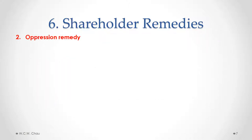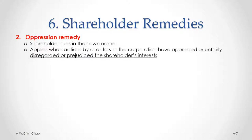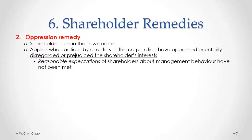The second remedy that a shareholder may have is called the oppression remedy, which also involves suing in court. In contrast to the derivative action, the shareholder sues in their own name, not the corporation's name. The oppression remedy applies when actions by the directors or the corporation have oppressed, or unfairly disregarded or prejudiced the shareholder's interest. That phrase has been interpreted fairly broadly. One way to look at it is to focus on the reasonable expectations of the shareholders — if those reasonable expectations about how the company should be run have not been met, then the affected shareholder could use the oppression remedy to stop or get damages for that behavior.